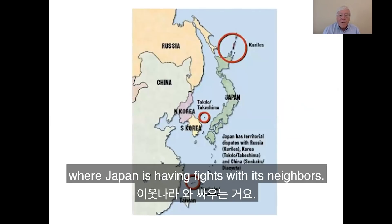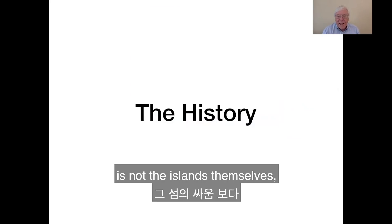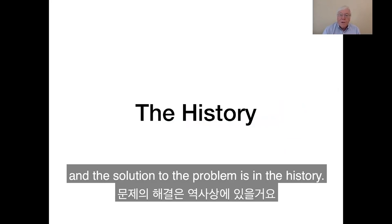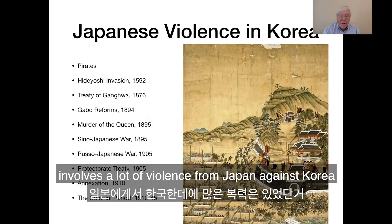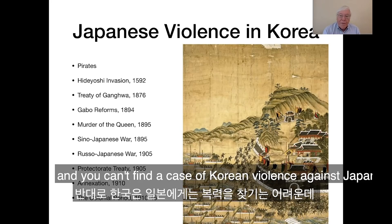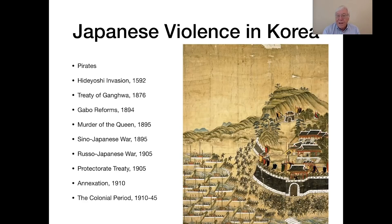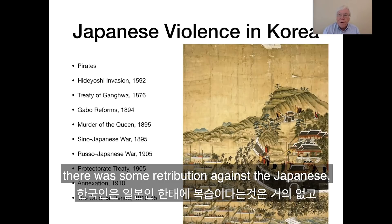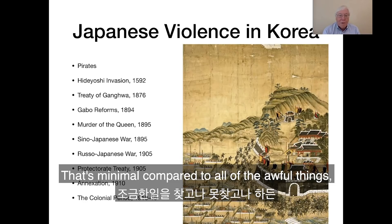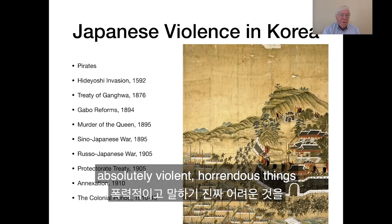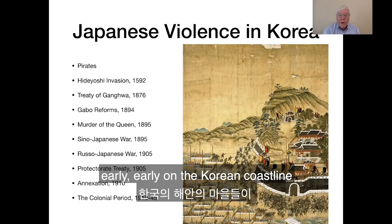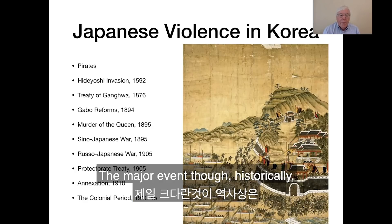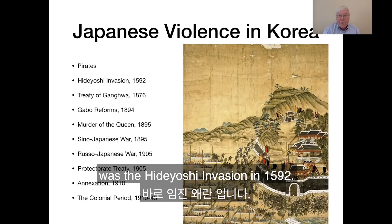Here's another map showing the three major areas where Japan is having fights with its neighbors. The thing I want to spend more time on is not the islands themselves, but a solution to the problem — and the solution is in the history. The history of Japan and Korea involves a lot of violence from Japan against Korea. You can't find a case of Korean violence against Japan unless you look really, really hard. Some say there was retribution against the Japanese as they left in 1945, but that's minimal compared to all of the awful things Japan has done to the Koreans. Starting off with pirates — early on the Korean coastline was plagued with Japanese pirates. The major event historically was the Hideyoshi invasion of 1592.